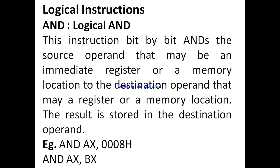Let's see the AND instruction. AND is a logical AND instruction. This instruction bit by bit ANDs the source operand, that may be an immediate, register, or a memory location, to the destination operand, that may be a register or a memory location. In this instruction, a bit by bit AND operation is performed.